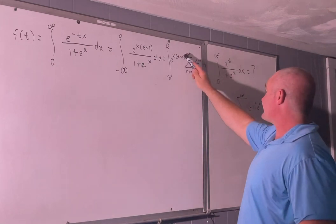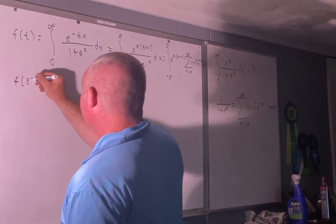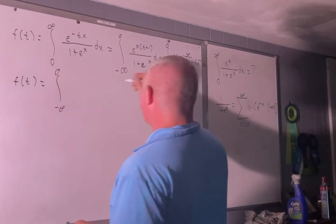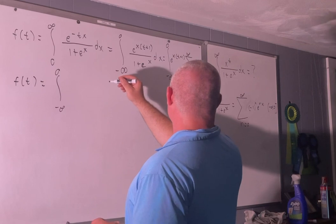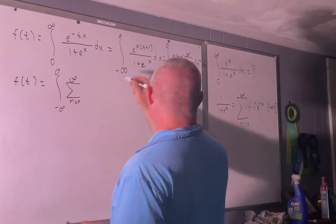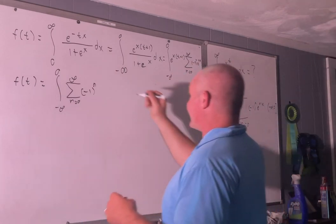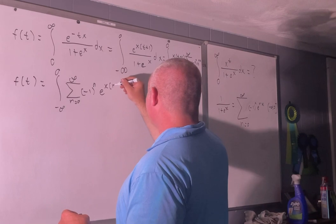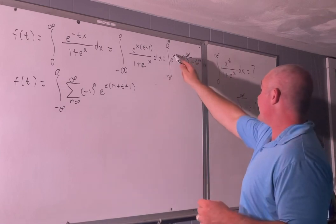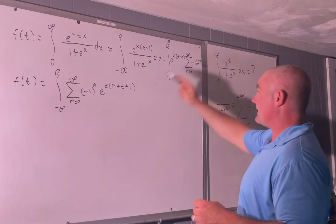Let's bring this e to the x times t plus 1 inside our sum. This gives us f of t equals the integral from negative infinity to 0 of the sum as n goes from 0 to infinity of negative 1 to the n times e to the nx plus tx plus x. We have tx, we have x, and we have nx.